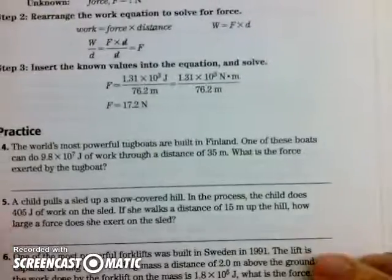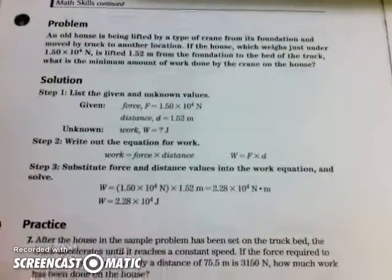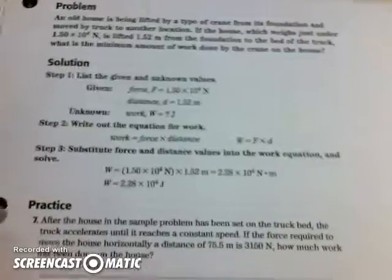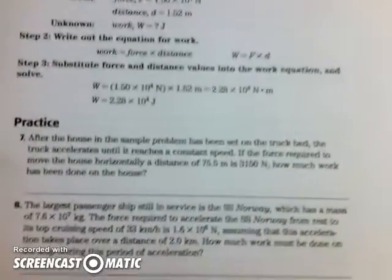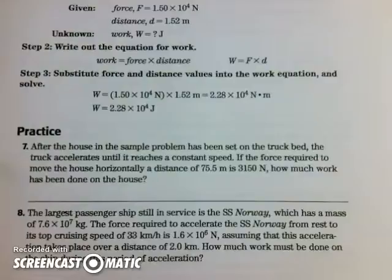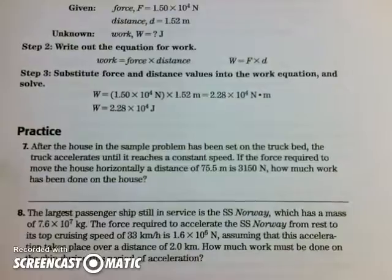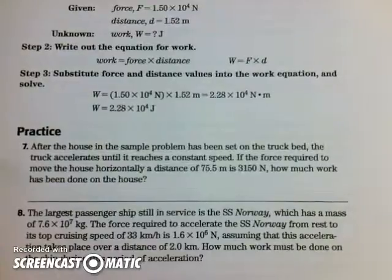Let's go on to the next page, number seven. On this page there is an example problem worked out for you, and then practice problems seven, eight, and nine. Let's do number seven. After the house in the sample problem has been set on a truck bed, the truck accelerates until it reaches a constant speed. If the force required to move the house horizontally a distance of 75.5 meters is 3,150 Newtons, how much work has been done on the house? Let's go ahead and write our givens and what we're trying to find.